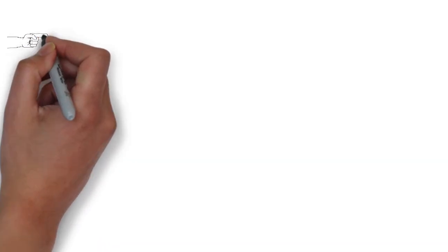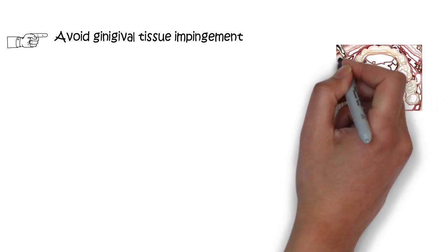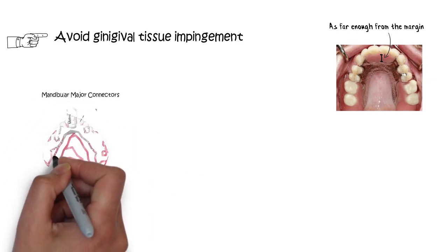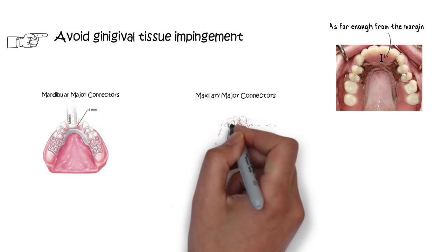Gingival tissue impediment by the major connector should also be avoided. The margins of the major connector should be located far enough from the gingival margins to avoid any interference, as hindrance to the gingiva will result in trauma. The recommended distance for the mandibular major connector is at least 4 mm below the gingival margins, while for the maxillary major connector it is at least 6 mm.